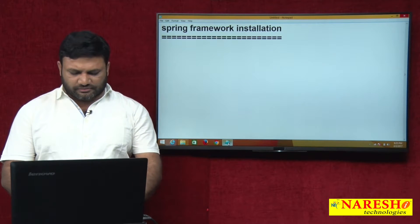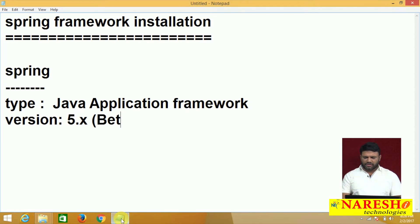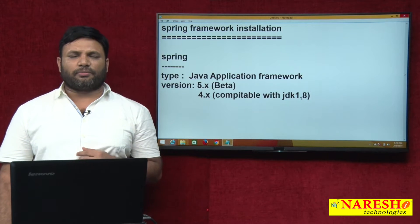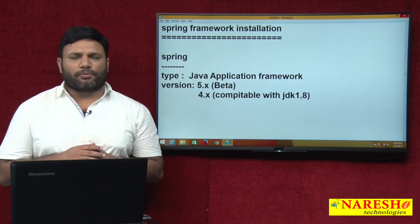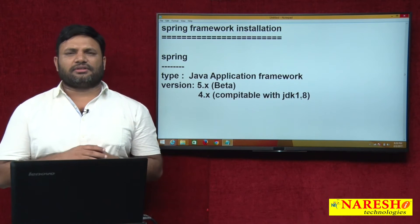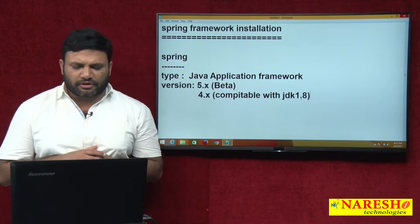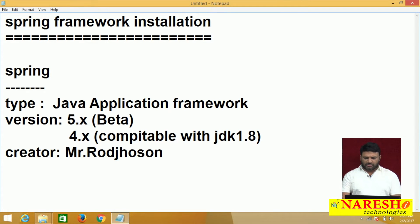Let us try to understand the basics of Spring first. The type is Java application framework. Version 5.x is there as a beta version as of now, and 4.x is stable. This 4.x is compatible with JDK 1.8, meaning we can use JDK 1.8 features in Spring 4.x like default methods in interfaces, lambda expressions, and repeated annotations. Creator: Mr. Rod Johnson. Vendor: Interface 21. I will show his photograph in a minute.